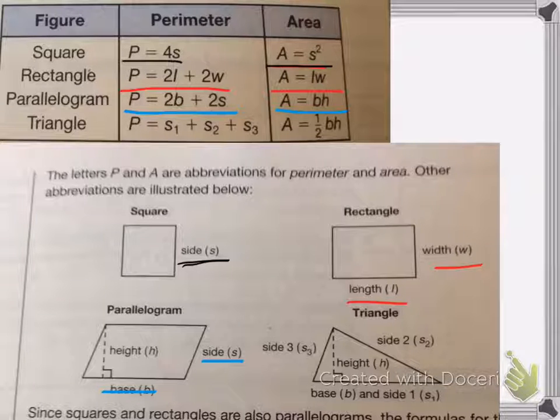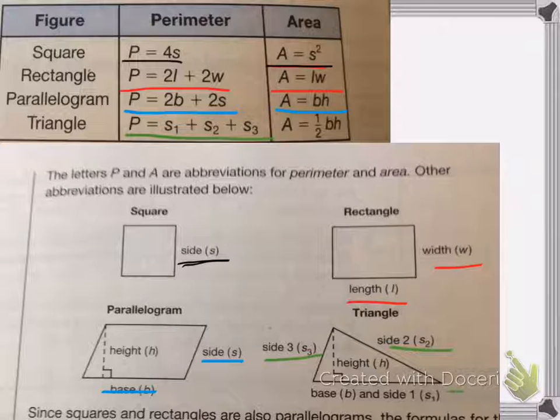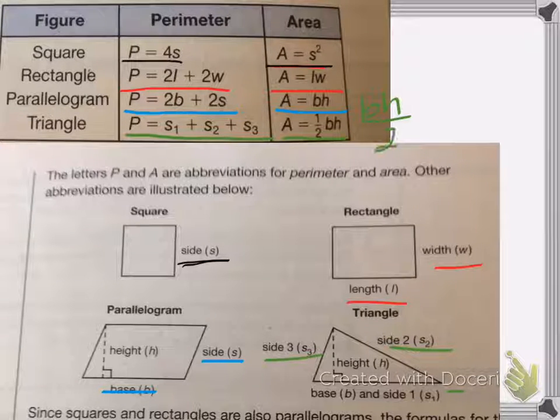And for a triangle, we've got side 1 plus side 2 plus side 3, so side 3, 2, and 1's down at the bottom. And then the area is 1 half the base times the height, or if you remember, base times height divided by 2.